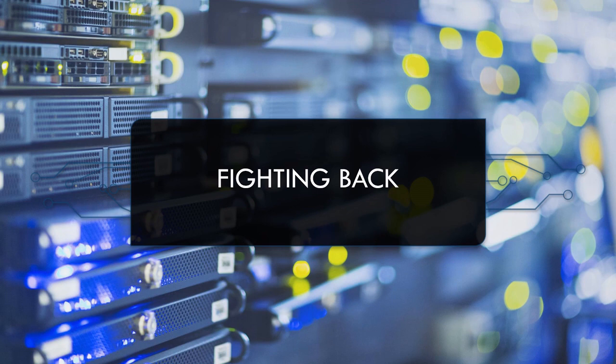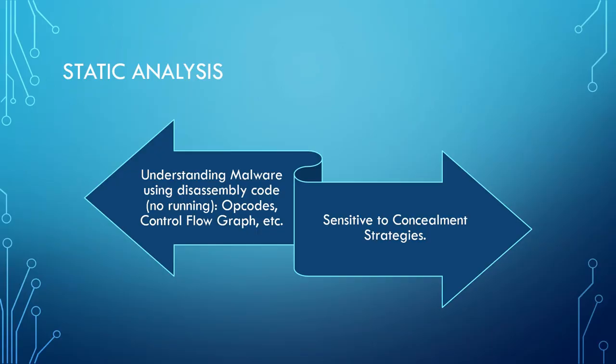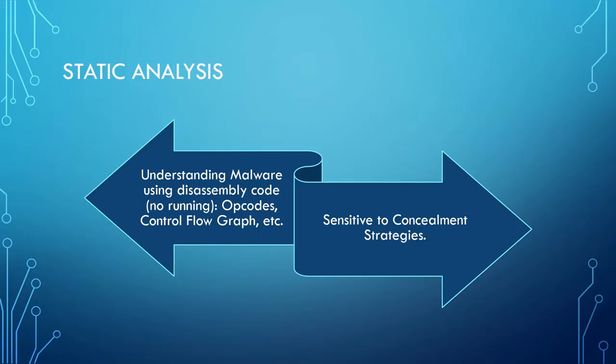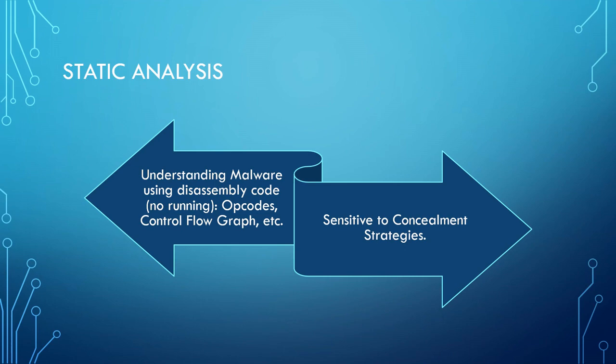So how do we fight back against these concealment strategies that broke traditional antiviruses? We don't care only about signatures — we also care about flows inside the program. Static analysis means we don't run the program; instead we analyze everything we can extract from it: control flows, API calls, disassembled code, and different operations. If the malware is encrypted this is more challenging, but tools like Radare or Ghidra allow you to obtain this information. The concealment quality determines how much time you'll need to dedicate.